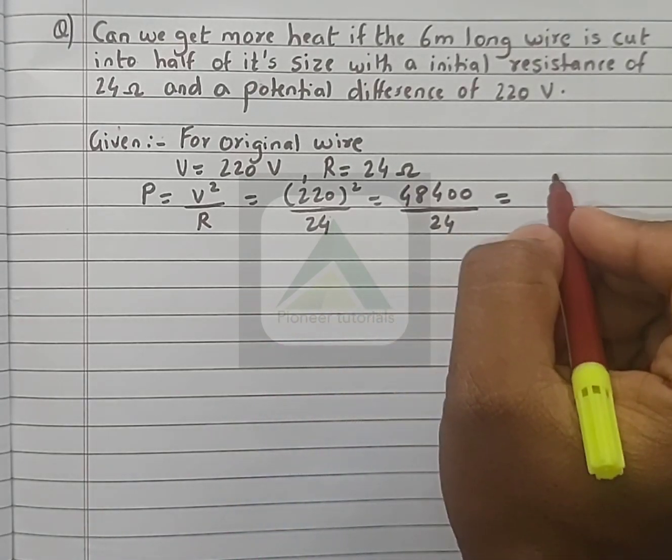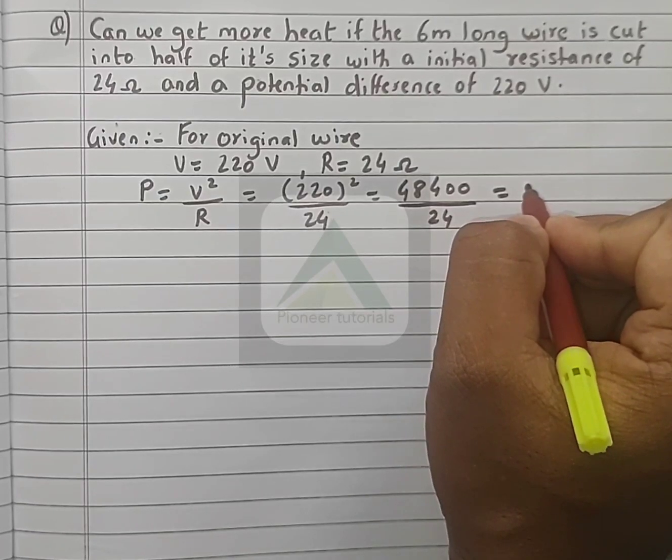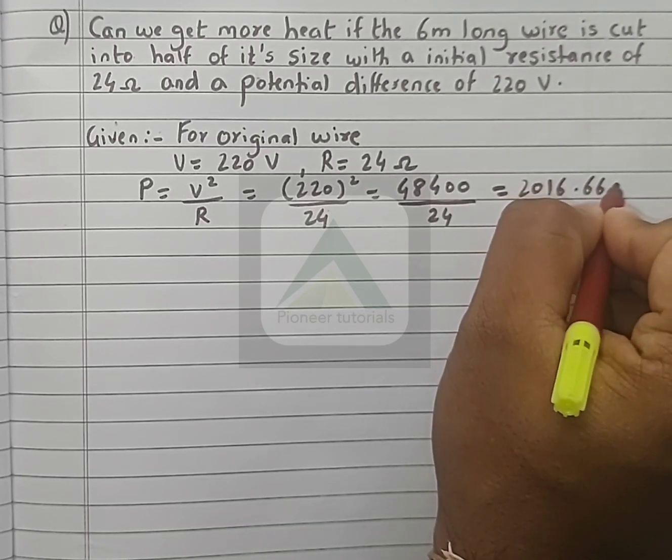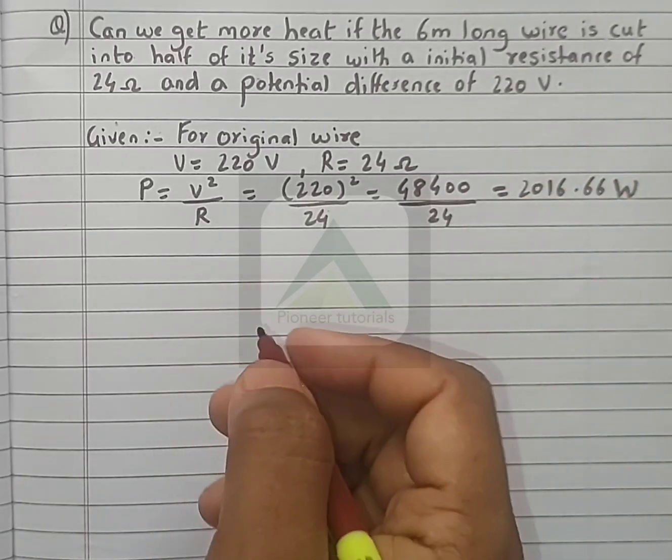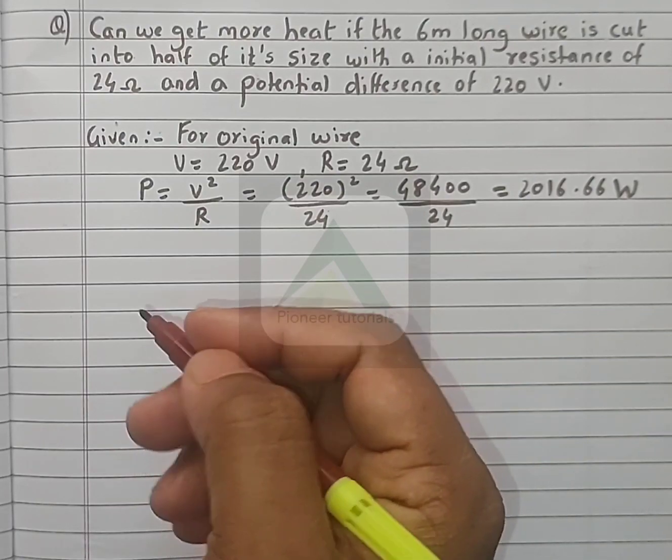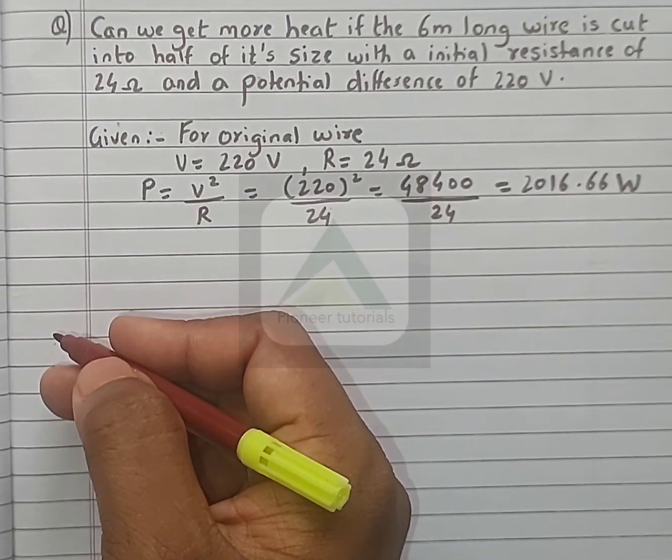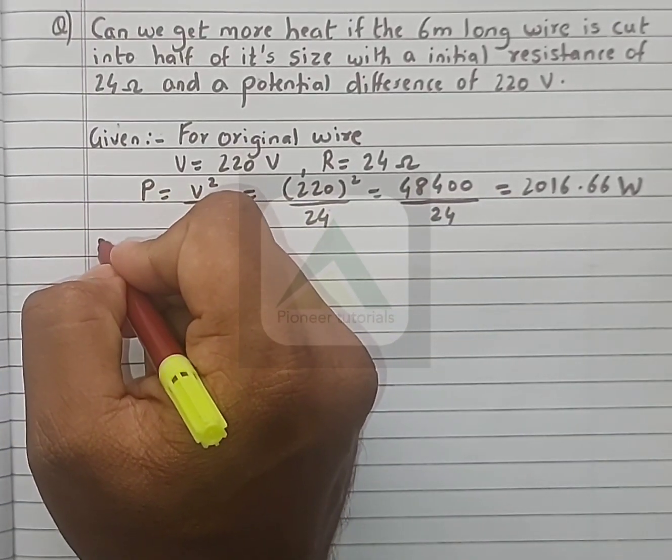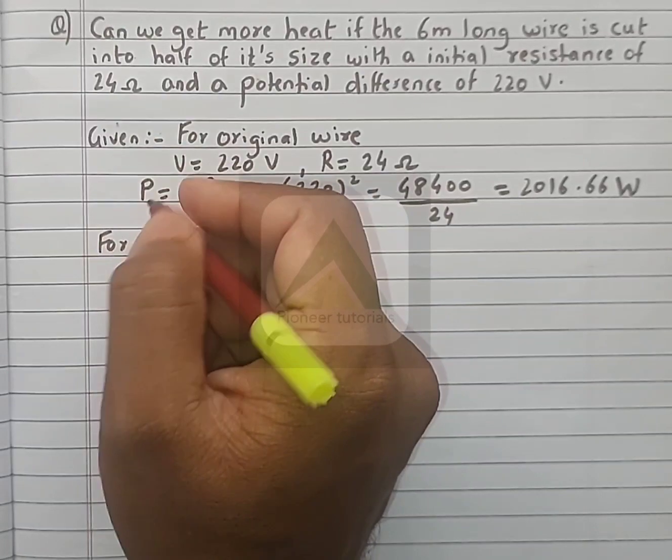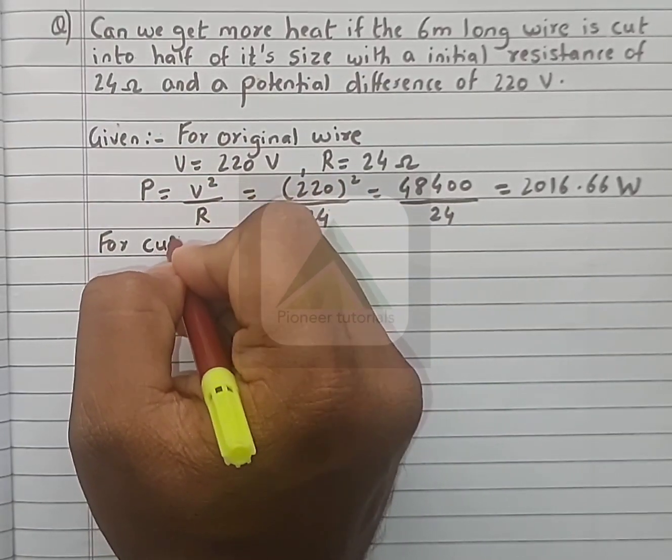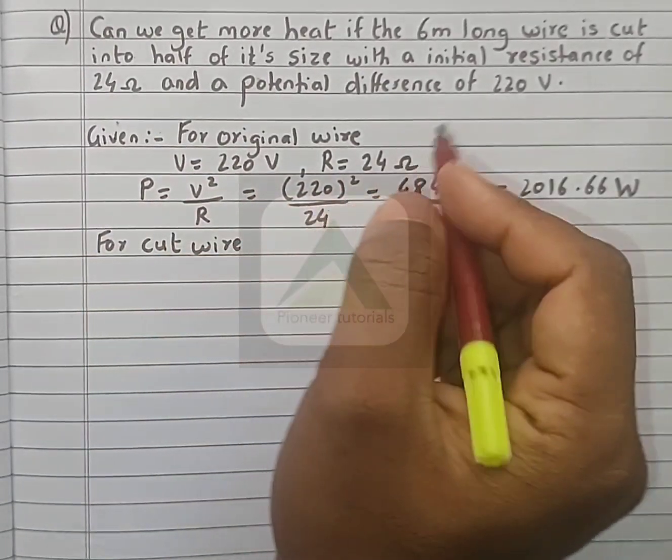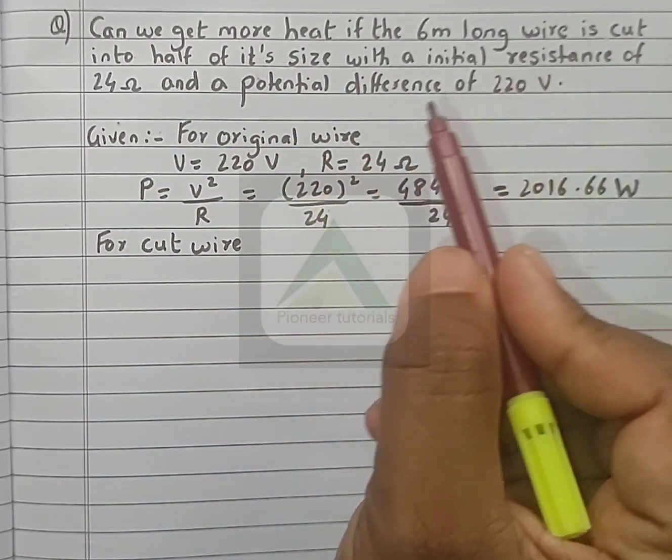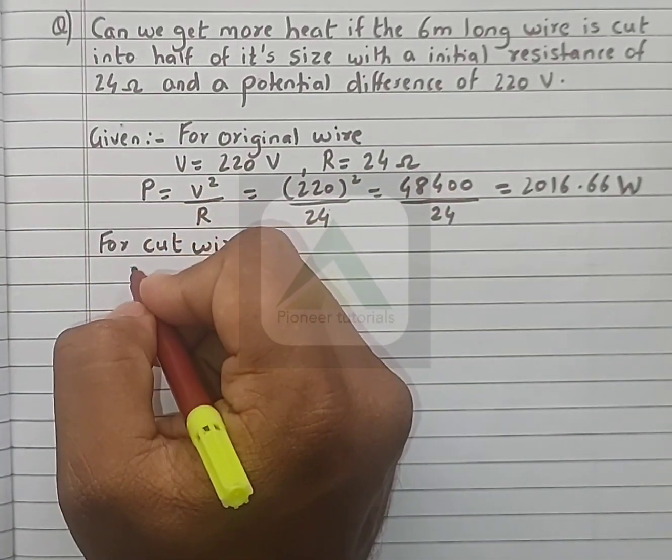For cut wire, when the wire is cut in half, the resistance also becomes half. The potential difference remains the same.